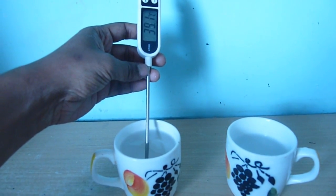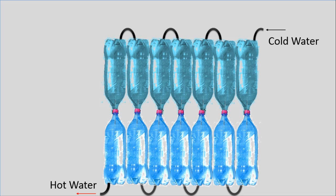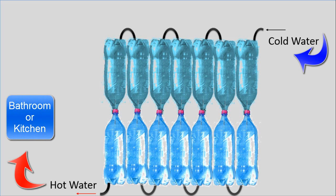Now you can connect an array of bottles, one side cold water comes in, other side you will get hot water to your bathroom or to your kitchen.